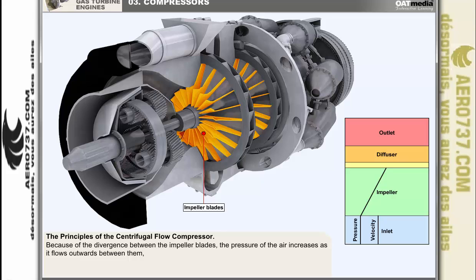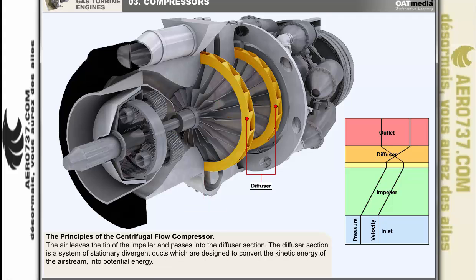Because of the divergent shape formed between the impeller blades, the pressure of the air increases as it flows outwards between them. And because the turbine is adding mechanical energy into the equation, the air's velocity also increases. The air leaves the tip of the impeller and passes into the diffuser section. The diffuser section is a system of stationary divergent ducts designed to convert the kinetic energy of the airstream — its velocity — into potential energy, pressure.